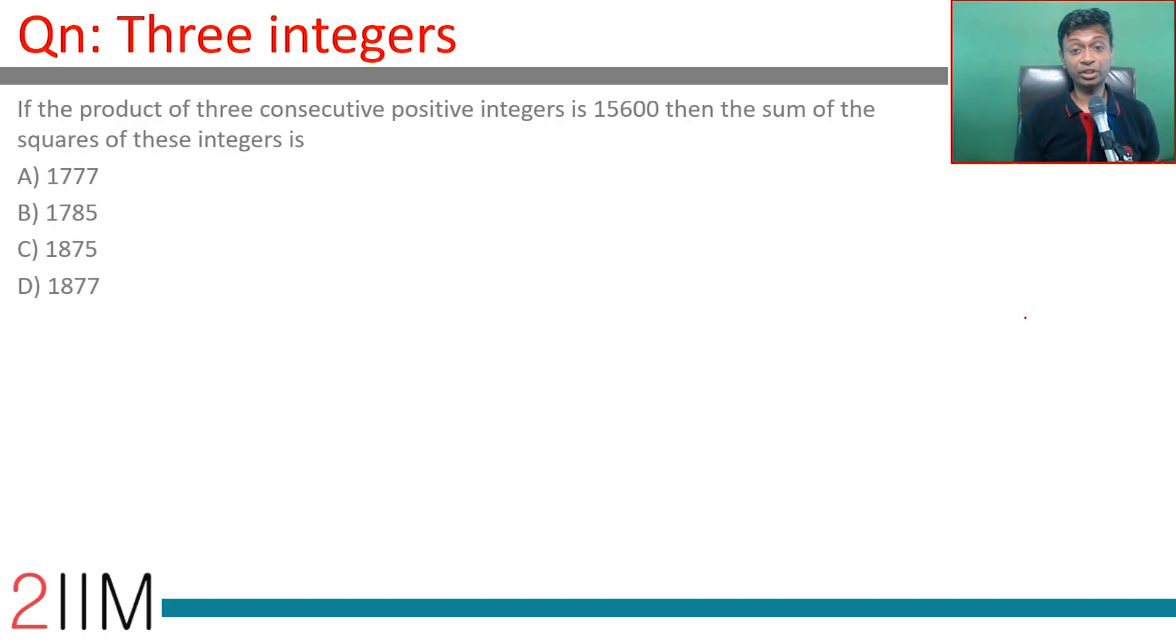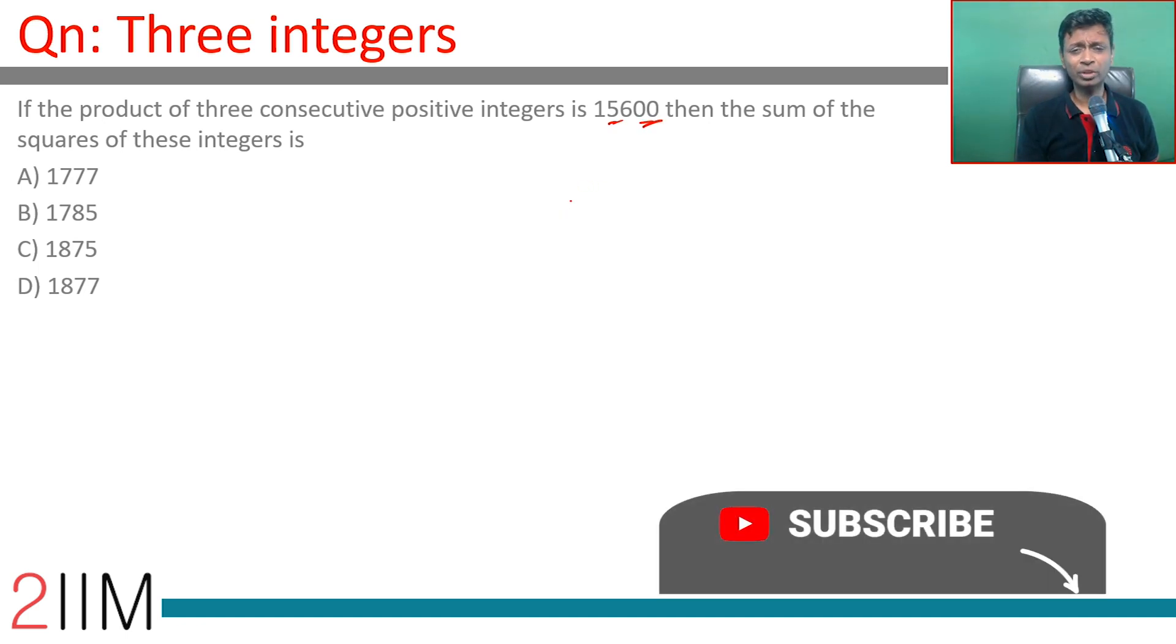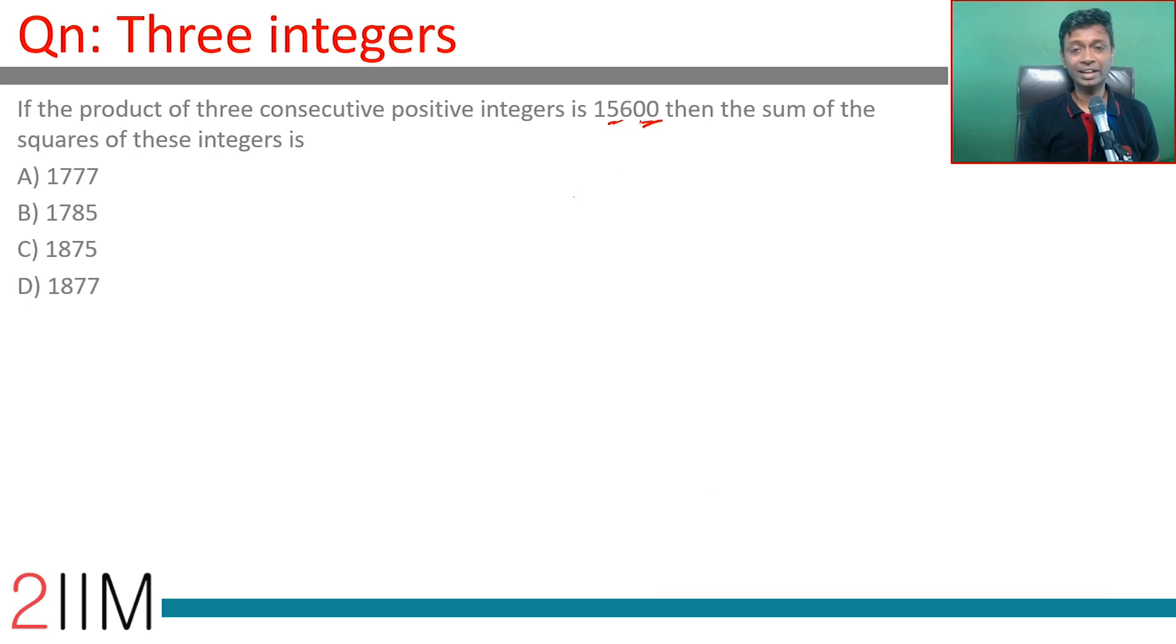The product of three consecutive positive integers is 15600. Then the sum of the squares of these integers. I'm going to guess this. 15600, we have to have two zeros, so we need to have something ending in zero or something ending in five, otherwise we won't get a zero.